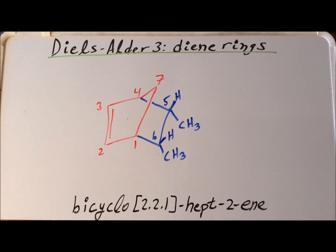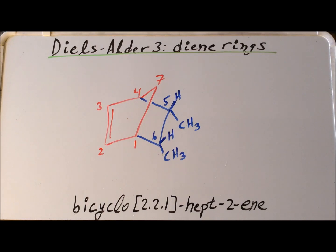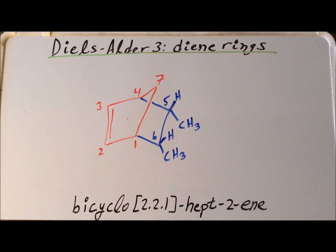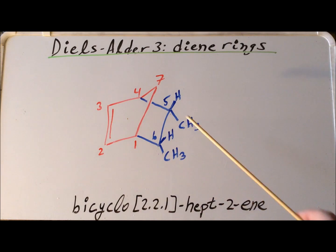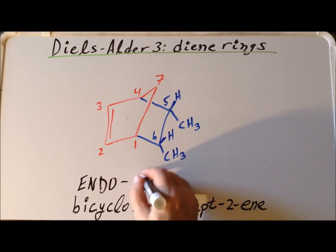But even more than that, a good question is: why couldn't we have the methyl groups in place of the hydrogens? That is a detail we will go into in another video, but for the time being, the situation where we have the methyl groups pointing down we call endo-substitution. It turns out that endo-substitution is favored when we have cis-substitution on the dienophile. If we were to have the methyl groups in the places of the hydrogens, that would be the less favored exo-conformation.